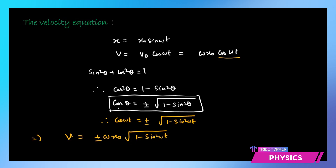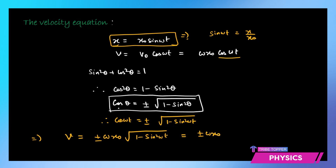Now, what is sin(ωt)? Since x = x₀ sin(ωt), that gives us sin(ωt) = x / x₀. So let us substitute sin(ωt) in terms of x and x₀. This will give us v = ±ω x₀ × √(1 − x² / x₀²).